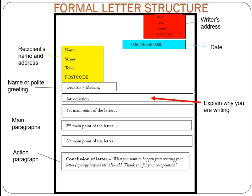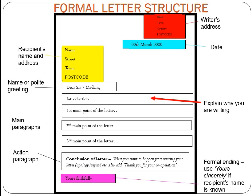Then you'll write an action paragraph — essentially the conclusion of your letter — stating what you want to happen as a result. You want action, not for them to just bin the letter. This could be requesting an apology or a refund. Then you'll put Yours Faithfully or Yours Sincerely. If you used Dear Sir or Madam, use Yours Faithfully. If you used the person's name, use Yours Sincerely, then write your name at the end with capital letters on first and surname.